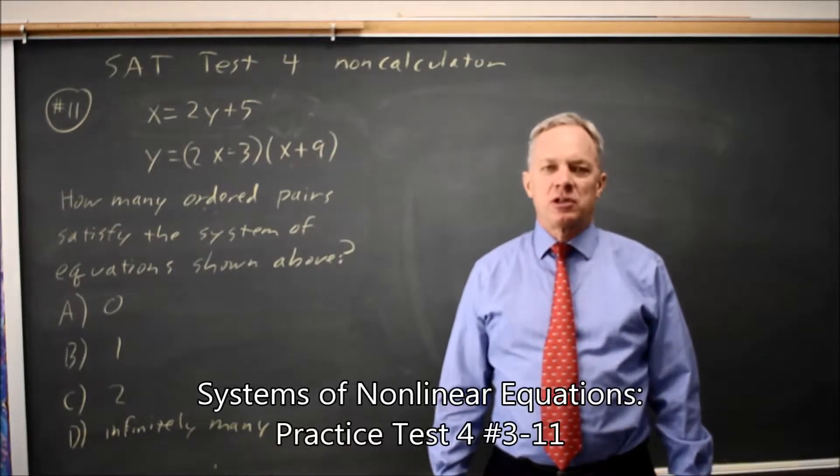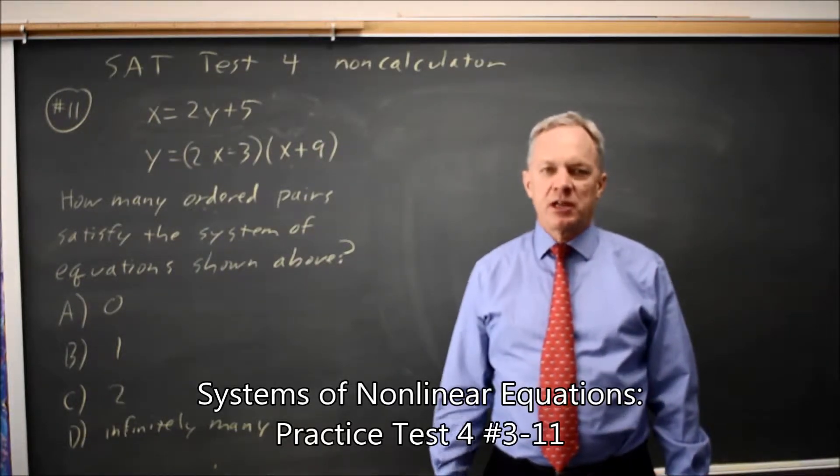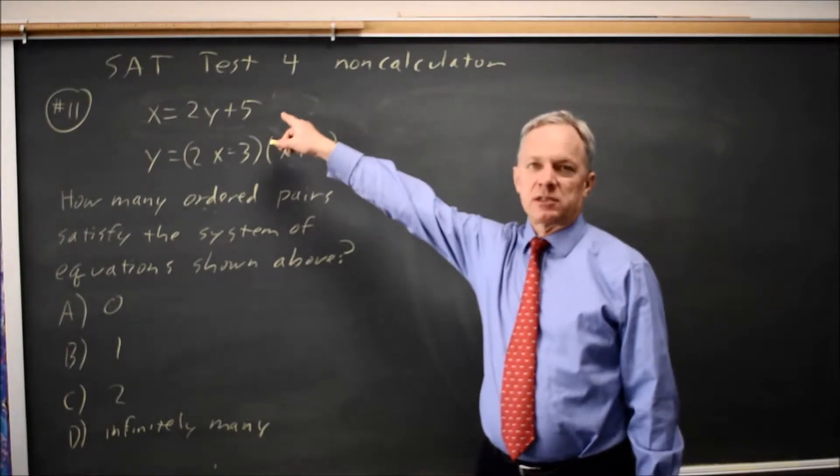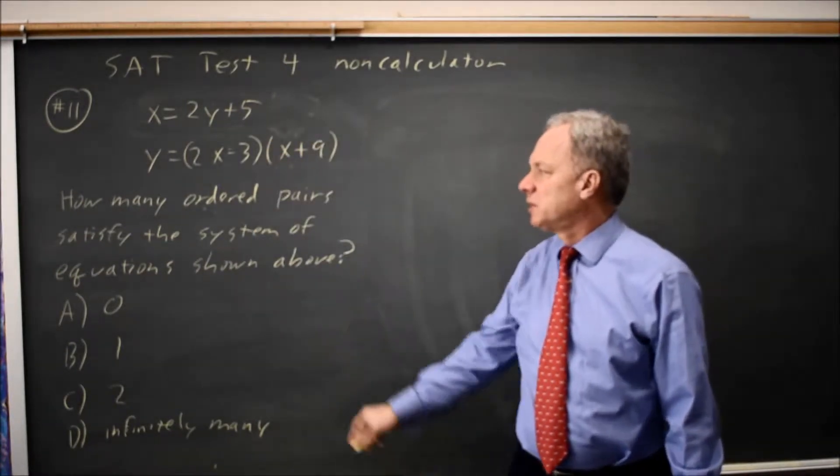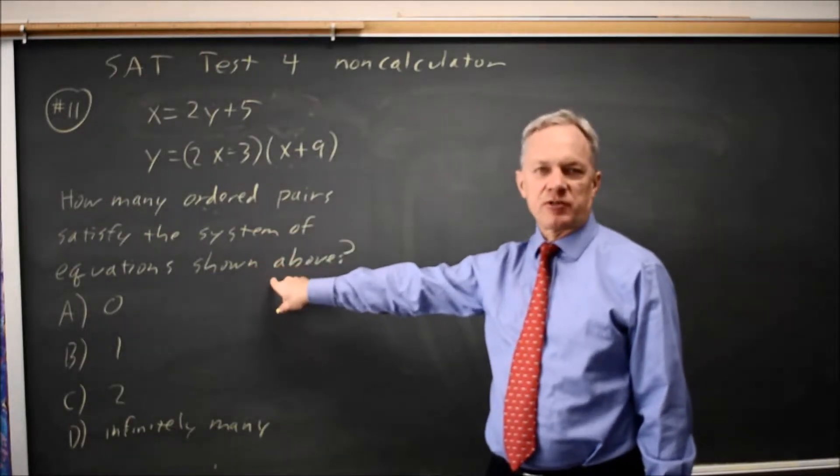This is SAT test 4, non-calculator section, question 11, dealing with a system of equations, one linear and one quadratic, so we have a non-linear system. The question is, how many ordered pairs satisfy the system?